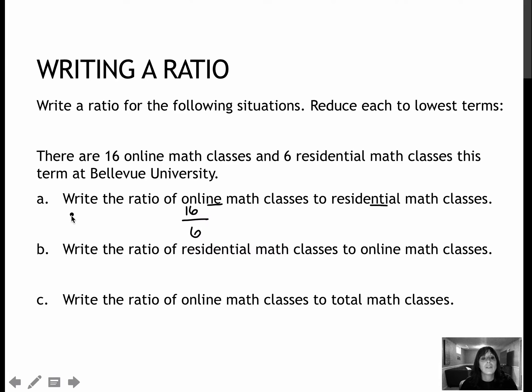So 16 to 6, obviously I could have written this 16 to 6 like this or 16 to 6. Now I'm going to reduce this because I want it in lowest terms, and it looks like both of these are even, so I'll divide by 2 on top and on bottom, which would give me 8 to 3, or 8 to 3.